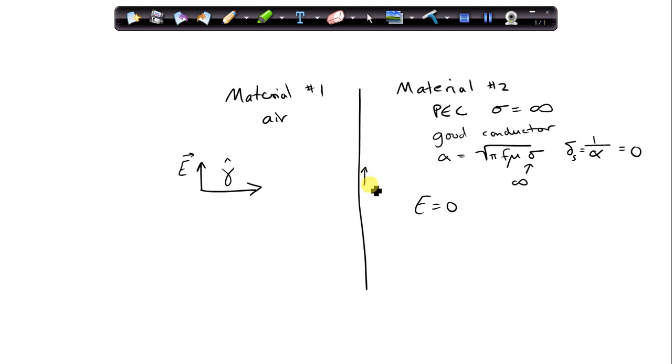If we know that the E-field inside material two is equal to zero, then I can write the tangential E-field in material two is zero. Then, from the boundary conditions, we know that the tangential E-field is equal on the outside, on either side of this interface. So here we can write E tan in material one is equal to zero as well.